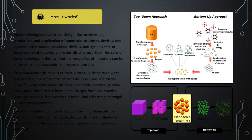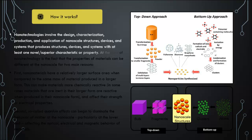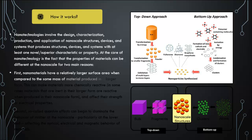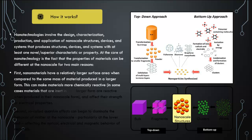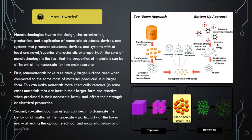How it works. Nanotechnologies involve the design, characterization, production, and application of nanoscale structures, devices, and systems that produce structures with at least one novel or superior characteristic or property. At the core of nanotechnology is the fact that the properties of materials can be different at the nanoscale for two main reasons. First, nanomaterials have a relatively larger surface area when compared to the same mass of material produced in a larger form, making materials more chemically reactive — in some cases materials that are inert in their larger form are reactive at nanoscale — and affecting their strength or electrical properties. Second, quantum effects can begin to dominate the behavior of matter at the nanoscale, particularly at the lower end, affecting the optical, electrical, and magnetic behavior of materials.